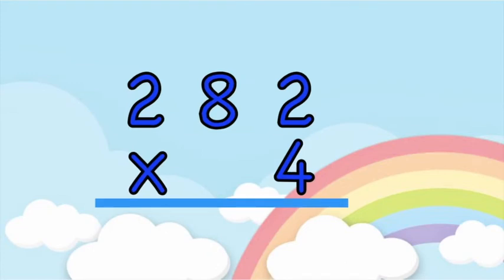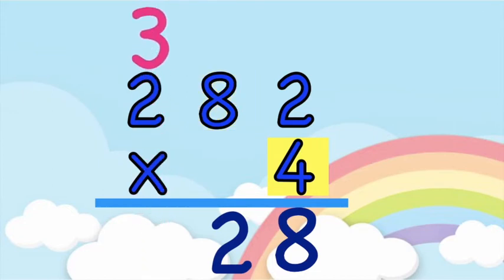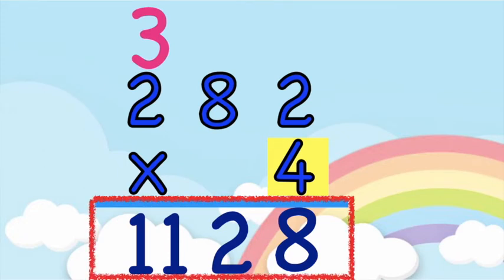How about if we have this: 282 times 4. Let's multiply 4 and 2. 4 times 2 — 4, 8. So we have 8. And then let's have 4 and 8. 4 times 8 — 4, 8, 12, 16, 20, 24, 28, 32. So we have 32. Write 2 at the bottom, then carry 3 at the top of 2. Then multiply the hundreds place: 4 times 2 is 8, plus 3 is equal to 11. So the product of 282 and 4 is 1,128.